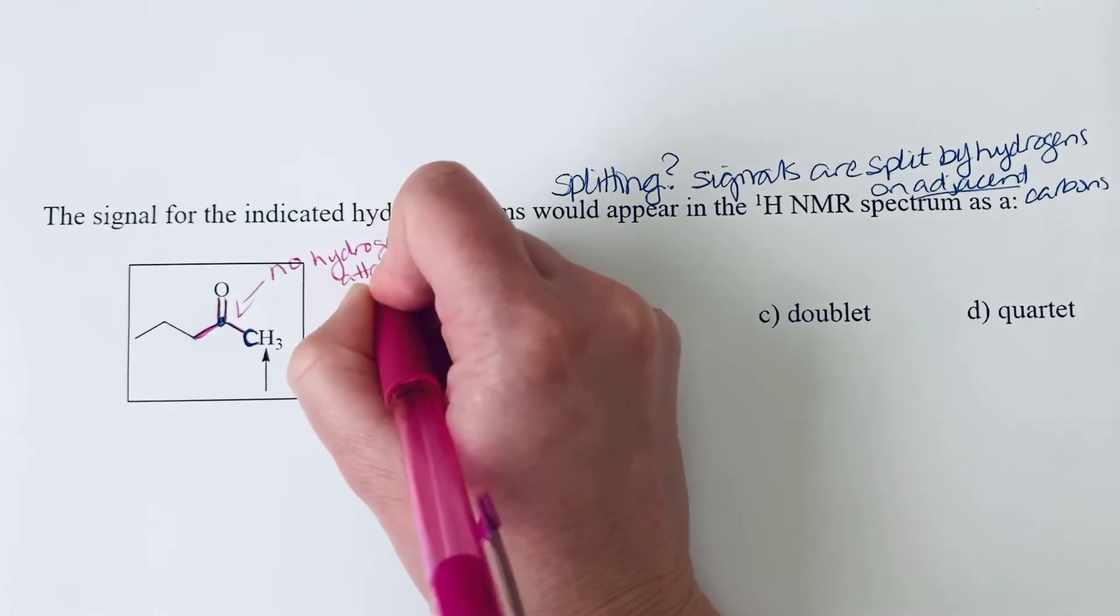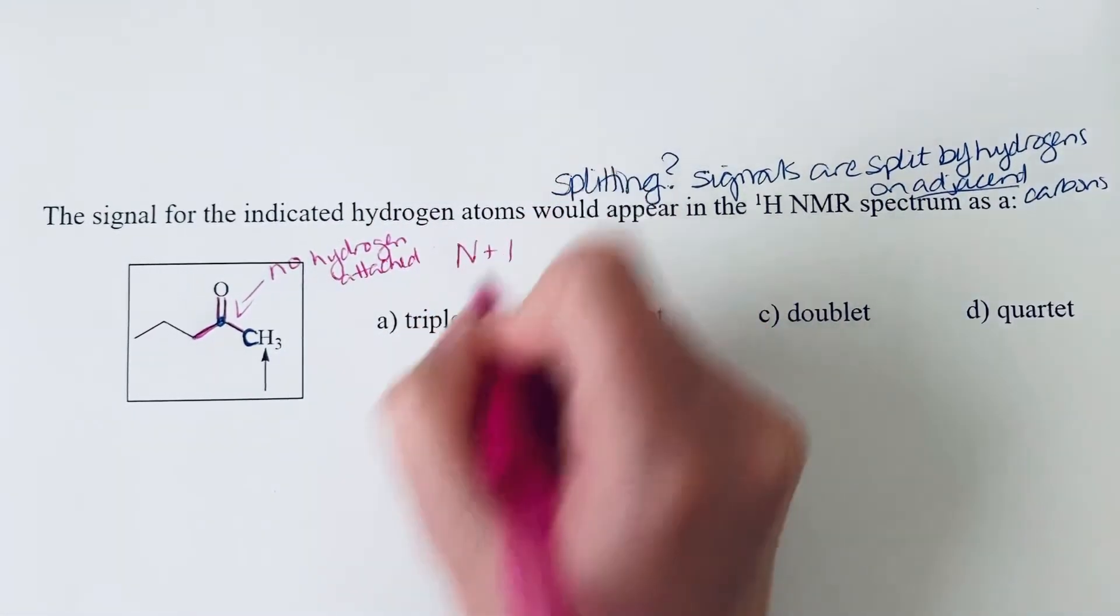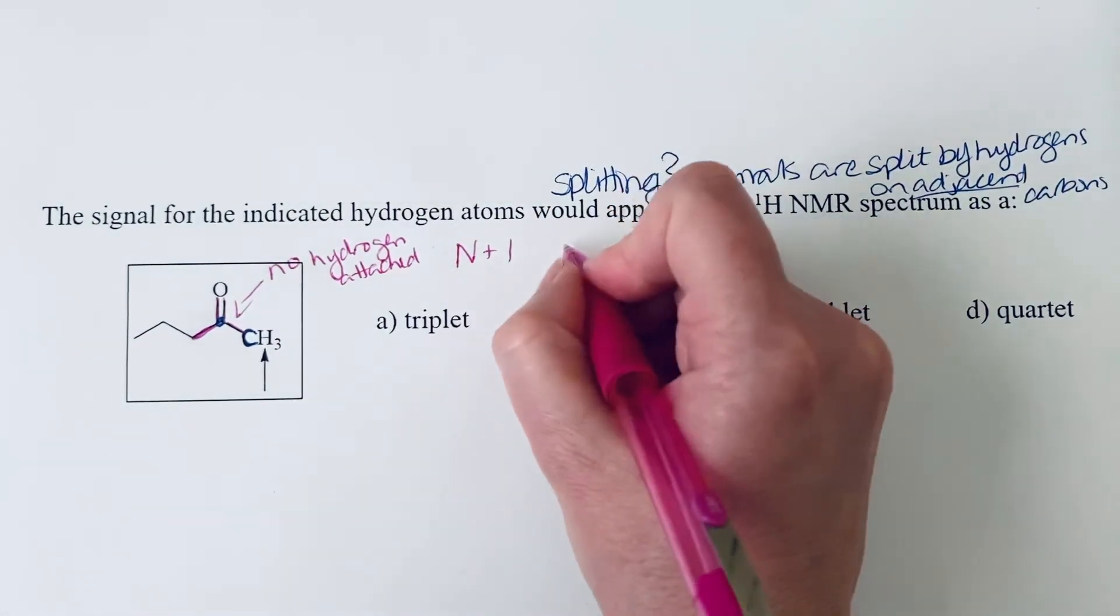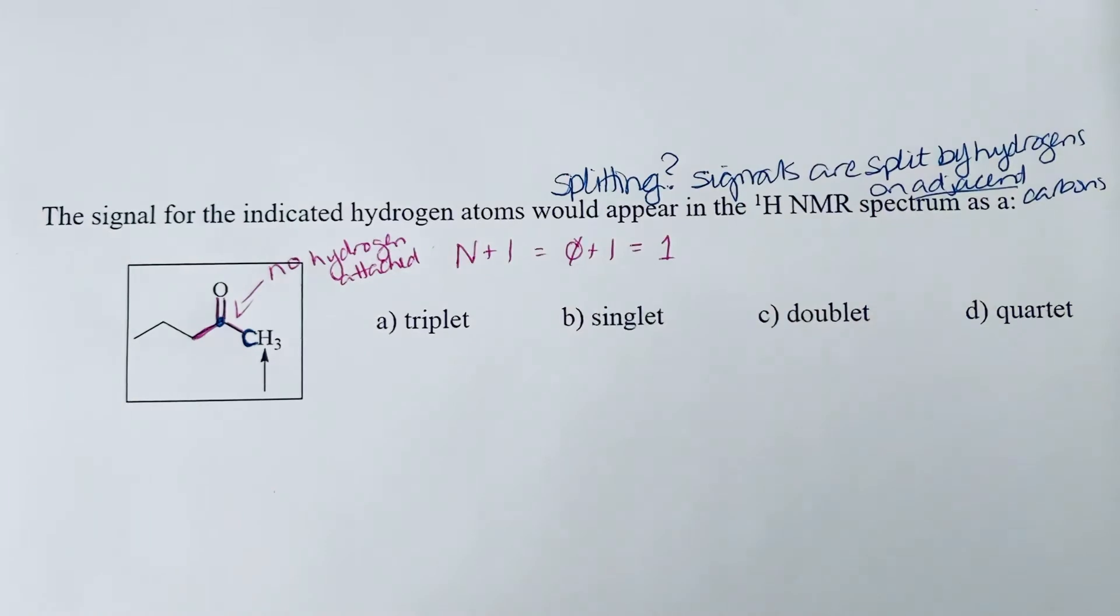So that means that if we are trying to determine the splitting, our rule for splitting is n plus 1. So in this case, n is equal to 0, so we have 0 plus 1 is 1, of course.